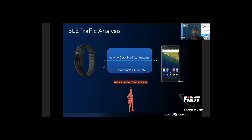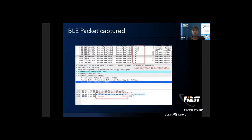We have already captured it and are going to display the packet capture using Wireshark. This is how the packet looked when we captured traffic between the device and the phone. You can see that the unencrypted BLE attributes and other GAP characteristics are visible in these packets. We did some research to find the step count and calories — we found the offsets, and you can see at the bottom we have highlighted the step count and calories being transferred from the device to the mobile.